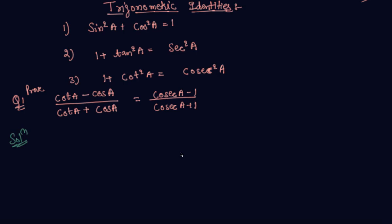So students, here is question 1, in which on the LHS we are given cot(a) minus cos(a) upon cot(a) plus cos(a), and on the RHS we are given cosec(a) minus 1 upon cosec(a) plus 1. We have to prove that LHS equals RHS. So first I will take the LHS term and convert all terms — whether cot or cos — into sine and cos.